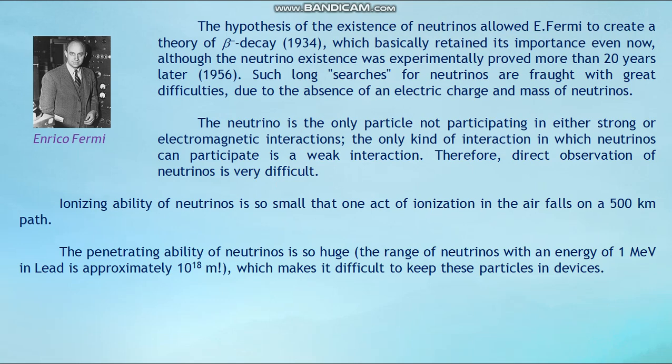The neutrino is the only particle not participating in either strong or electromagnetic interactions. The only kind of interaction in which neutrinos can participate is the weak interaction; therefore, direct observation of neutrinos is very difficult. The ionizing ability of neutrinos is so small that one act of ionization in air occurs over a 500-kilometer path. The penetrating ability is so huge that the range of neutrinos with energy of 1 MeV is approximately 10¹⁸ meters, making it very difficult to detect them in devices.